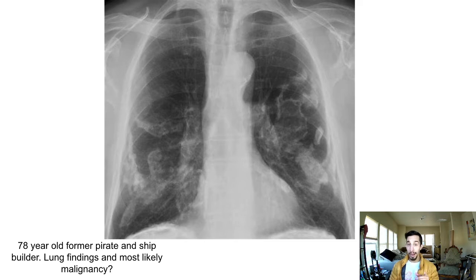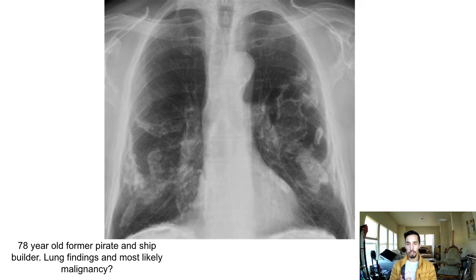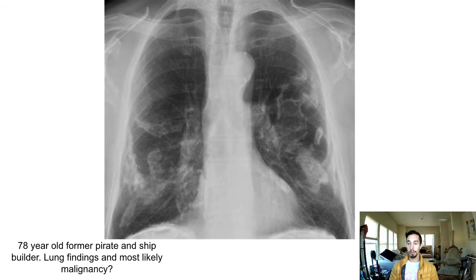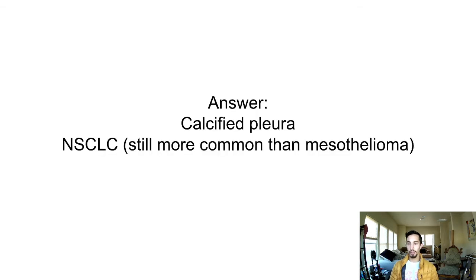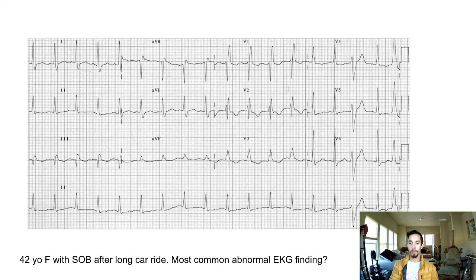Next: 78-year-old former ship builder — what's the most likely malignancy? Anytime you see ship builder or pirate, you think asbestos. The second step is: what's the most likely cancer? The answer is actually bronchogenic or non-small cell lung cancer, like squamous cell cancer — not mesothelioma. Although mesothelioma is very specific for asbestos, it's not the most common. That's always an epidemiologic gotcha. Look for calcified pleural plaques on chest X-ray.